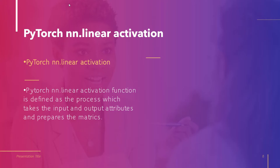Let's move forward and discuss about PyTorch nn.Linear Activation. PyTorch nn.Linear Activation function is defined as the process which takes the input and output attributes and prepares the matrix. The nn.PReLU is used as an activation function that creates the network and also fits the complex data. Now let us understand the concept of PyTorch nn.Linear Activation with the help of an example.